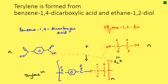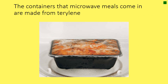Terylene is trademarked, just like Kevlar is trademarked — it's a trade name. A use of the polymer terylene: the containers that microwave meals come in are made from terylene — that would be the black bit, not the film on top. Also some clothes are made out of terylene, or at least they used to be.